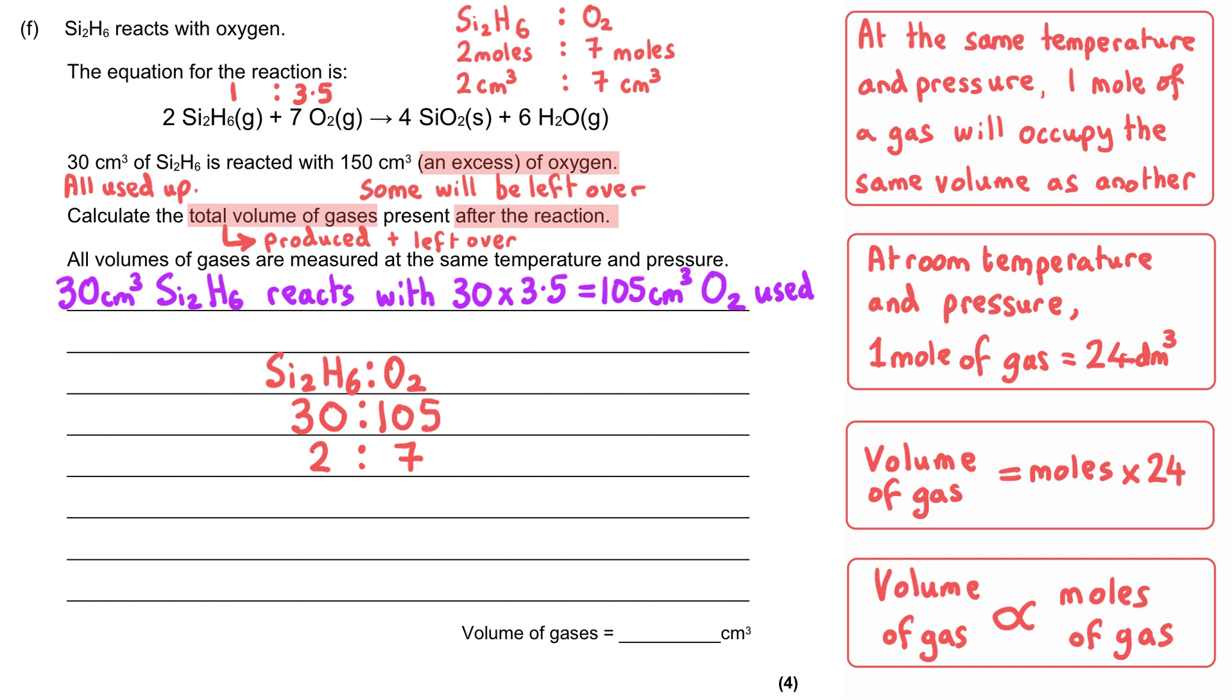105 cm³ of oxygen are used up, and this will get us our first mark. But some of our oxygen will be left over, and we can work out the volume that will be left over by subtracting 105 away from that starting volume of 150. This means 45 cm³ of oxygen will be left at the end of the reaction, and this gets us our second mark.